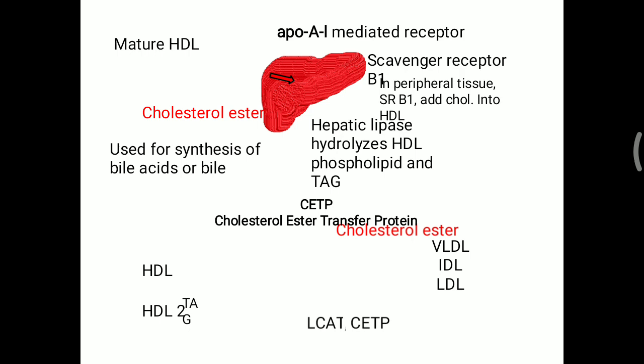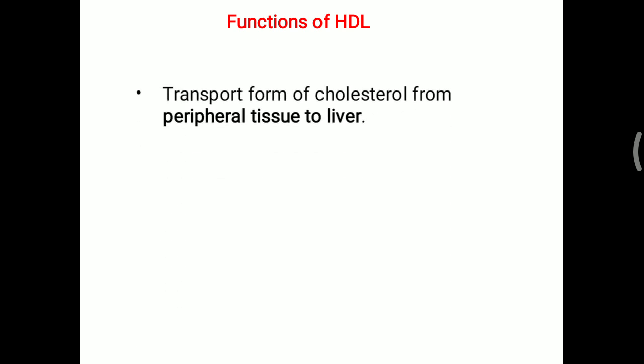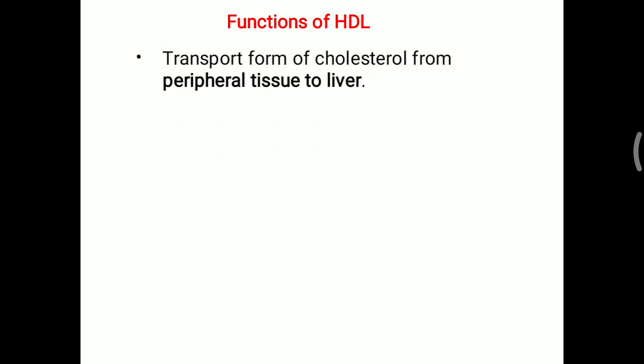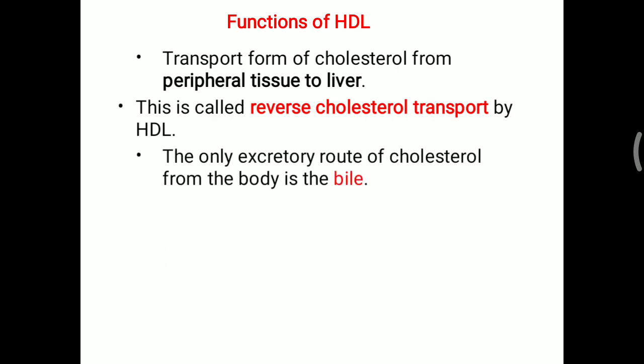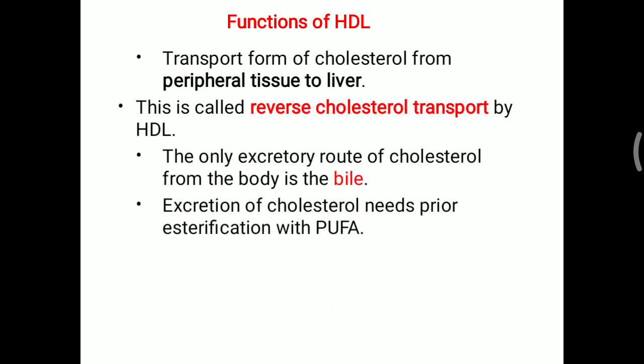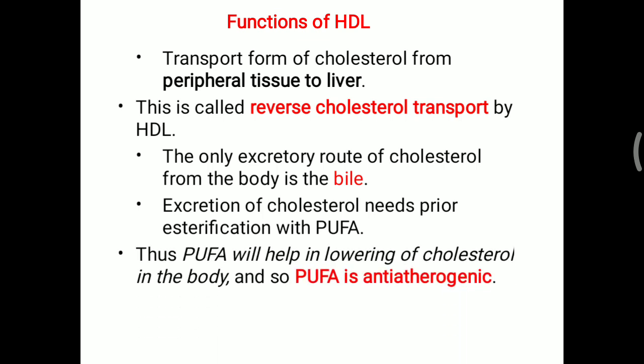The two most important enzymes for HDL metabolism are LCAT — lecithin cholesterol acyl transferase — and CETP — cholesterol ester transfer protein. The basic function of HDL is transporting cholesterol from peripheral tissue to the liver, called reverse cholesterol transport. The only excretory route of cholesterol from the body is bile. Esterification with PUFA — polyunsaturated fatty acid — is needed to accelerate cholesterol excretion.